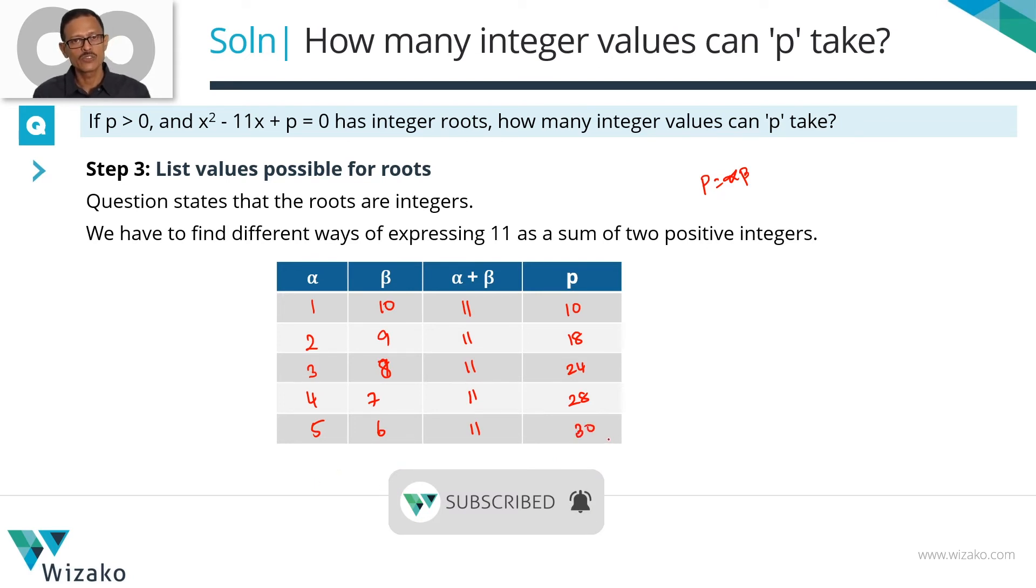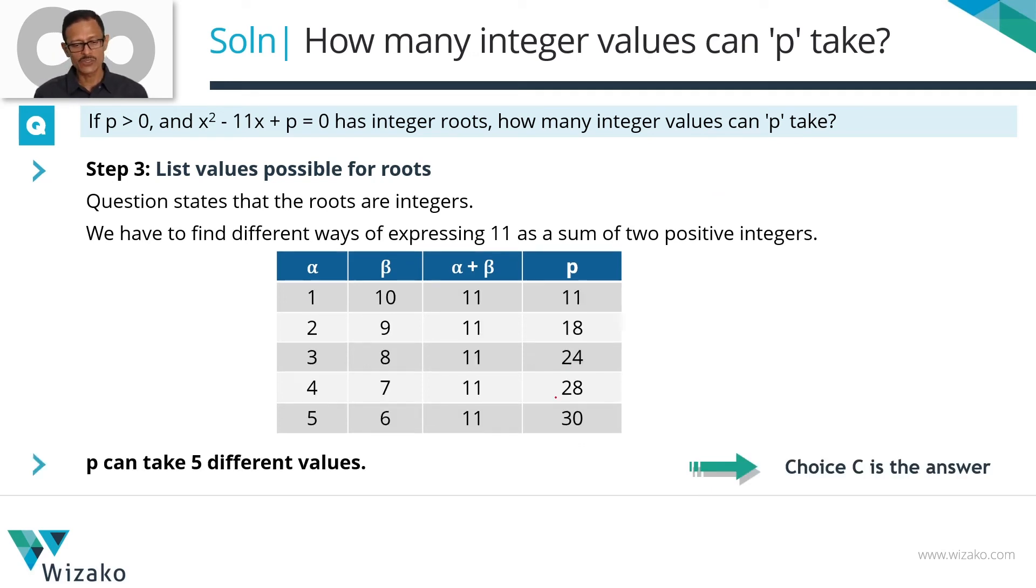6 and 5, the product will be 30. So we don't need to go any further. So how many different values can p take? p can take 5 different values. Here are those 5 values and these are the listings. Choice C is the correct answer to the question. Should take you about 45 seconds to a minute to get to this answer.